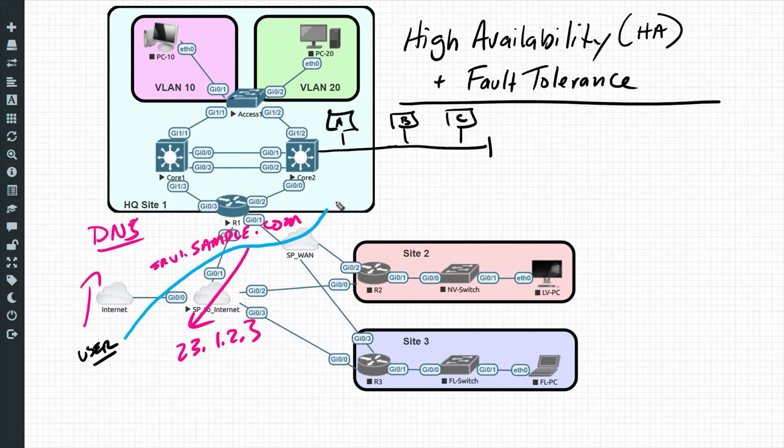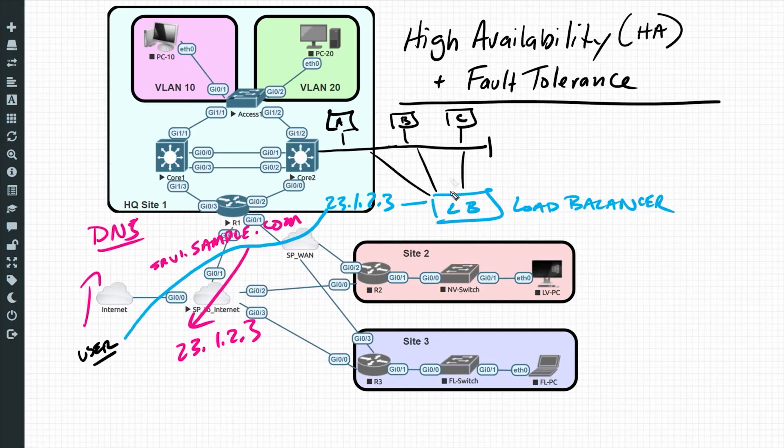That traffic at layer 3 is forwarded up to that IP address of 23.1.2.3. However, on our end, instead of having that go directly to one of these servers, we have that go to an intermediate device, and that would be our load balancer. In the background, the load balancer has been keeping track of these devices, polling them, and it knows exactly how many sessions each one has.